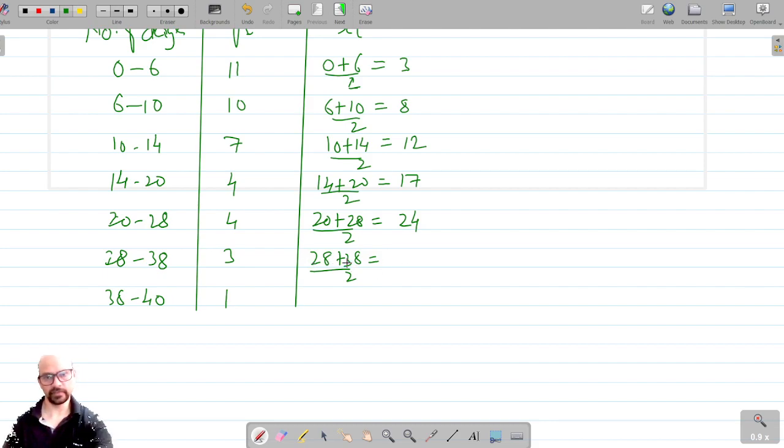The next one is 30 divided by 2 which is 33, and 38 plus 40 divided by 2 is 39.